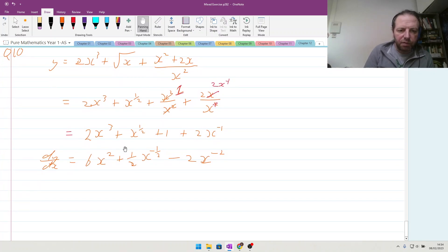And so to write it out in a similar format to what they gave it to us in, we're going to be looking at 6x squared plus 1 over 2 square root x minus 2 over x squared.